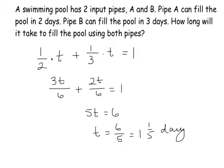This means that using both pipe A and pipe B together, it will take 1 day and a fifth to fill the pool.